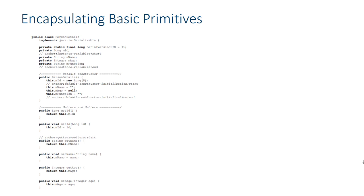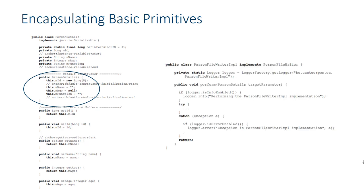So we know we have to encapsulate these basic principles. For data classes representing data entities, we have to provide default constructors, getters, and setters. For processing actions — a processing function or main method in a processing class — we just need to ensure that the data entities which are passed are version transparent and that the interface is also version transparent.